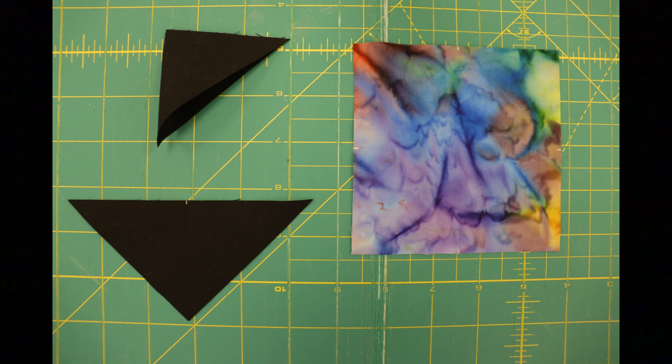We're going to start making our square in a square. But the first thing we want to do is make sure we have the middle points of our triangles as well as our square itself. So you're going to fold the background quarter-square triangles from corner to corner right around the long edge, and then just make a little crease. You can even put a little mark there so that you know the midway point. You're also going to do the same for the square. Fold it in half and then fold it in half the other way. Make a little crease so that you know the center points.